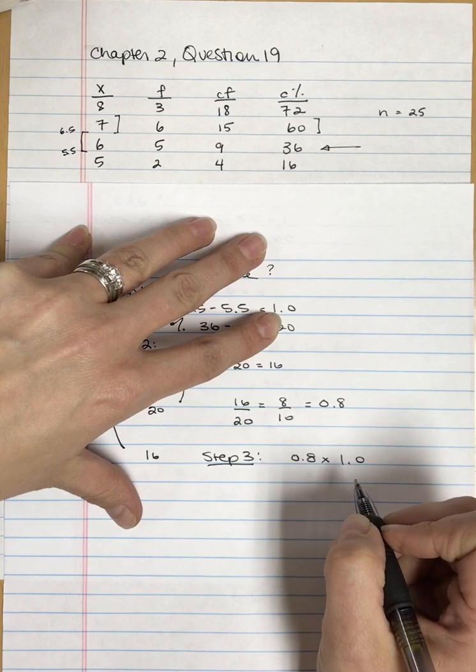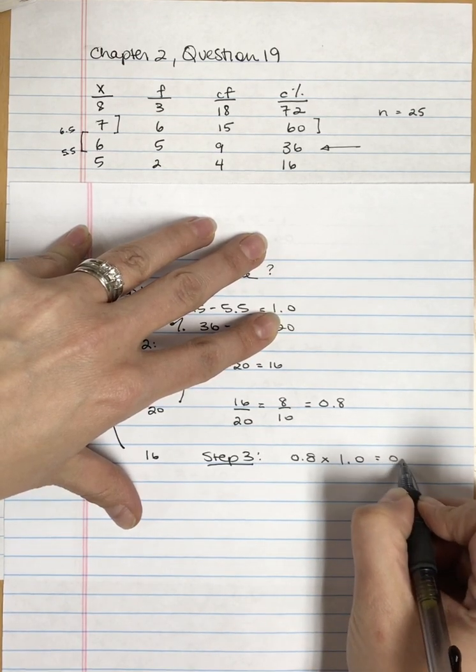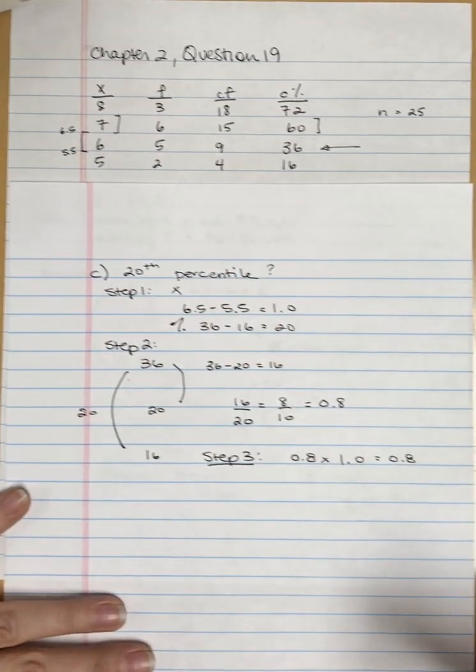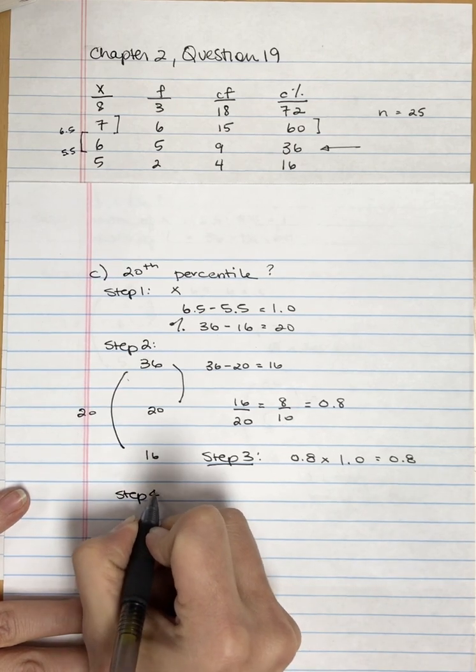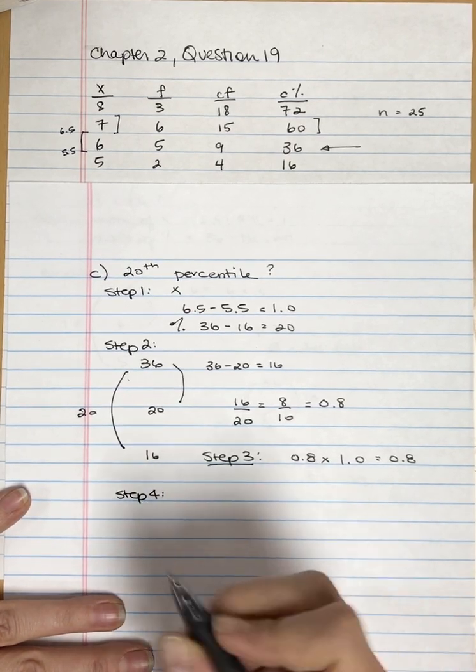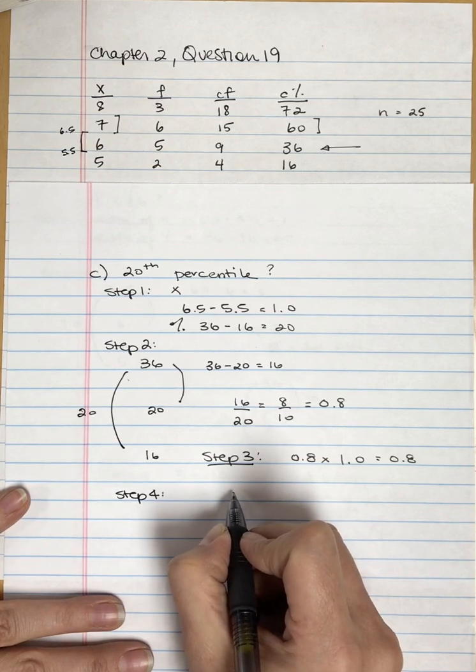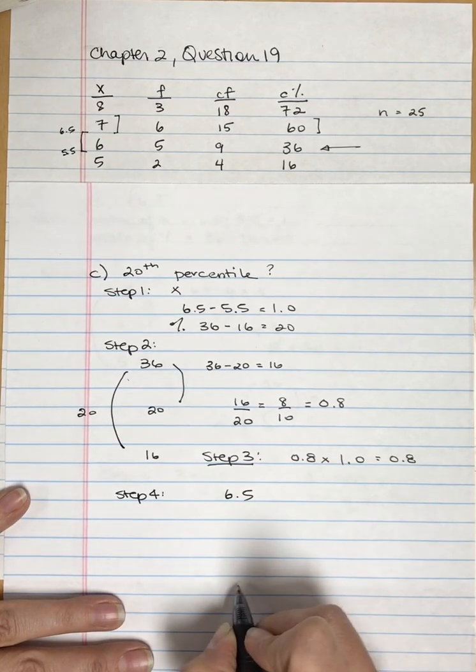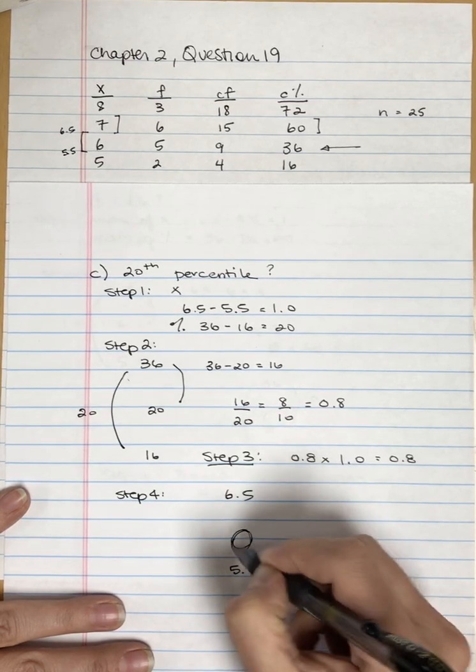That will not always be the case. We know we have to go 0.8 units down from the upper real limit. Step four: the upper real limit of X is 6.5, and the lower real limit is 5.5. We're trying to find this score.